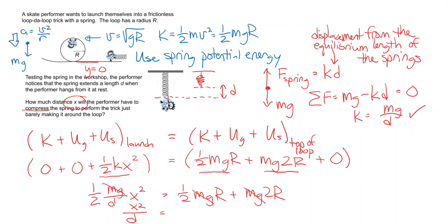This is equal to r plus 4r, which is 5r. So when I solve for x, I get that x is the square root of 5 times r times d.